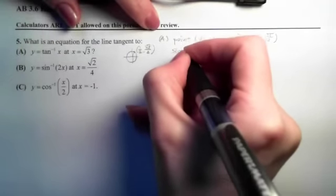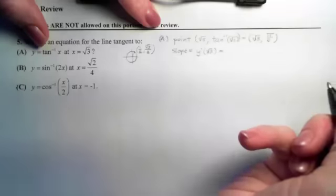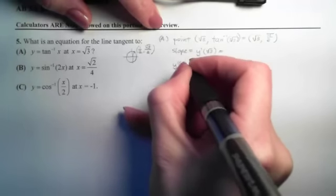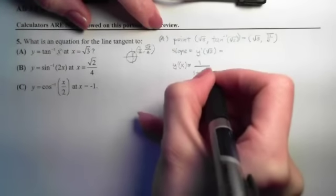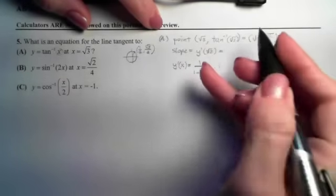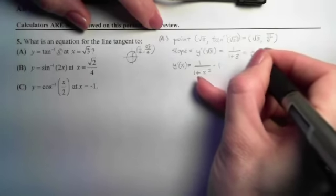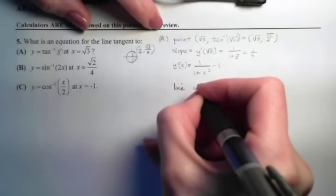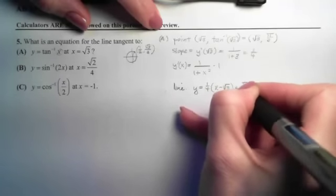The slope will be the derivative evaluated at the point. Before we can figure out what that is, we have to take the derivative. The derivative of arctan is 1 over (1 plus whatever is inside squared) times the derivative of what was inside, which in this case is 1. Evaluating at root 3: we plug in root 3 for x and square it, giving 3, so the slope is 1/4. Now that I have the point and the slope, I can write the equation of the line: y equals the slope times (x minus the x-coordinate) plus the y-coordinate.